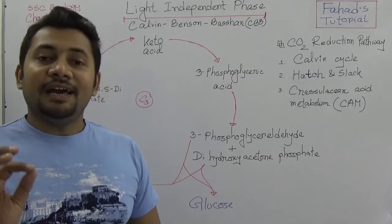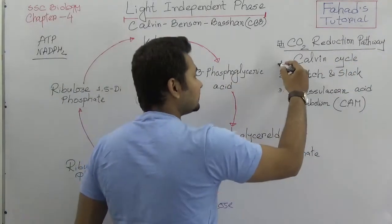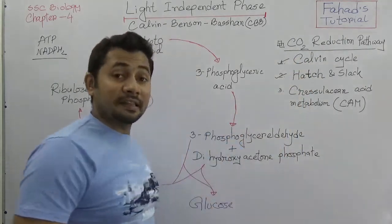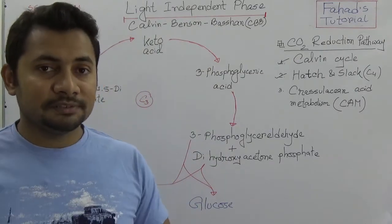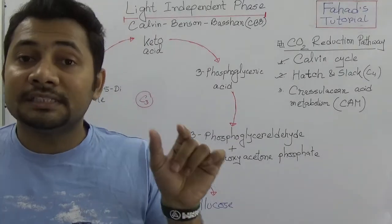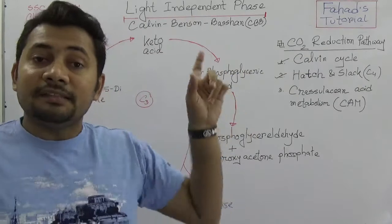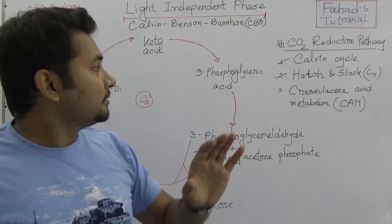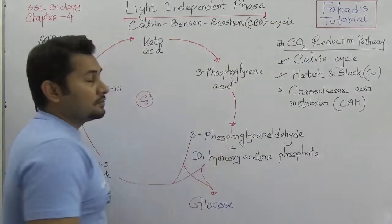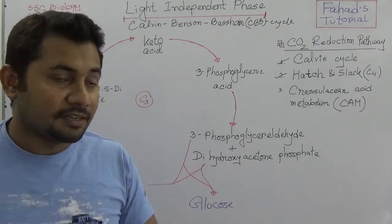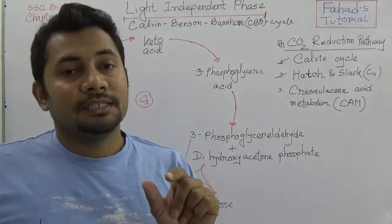This is a carbon dioxide reduction phase. This CO2 reduction pathway can be of 3 types: Number 1 — Calvin cycle. Number 2 — Hatch and Slack cycle, also known as C4 cycle, because the first permanent compound of that pathway is oxaloacetic acid which is a 4-carbon compound. Hatch and Slack will be the next class. In this class I will only be explaining the Calvin cycle, also known as the Calvin-Benson-Bassham (CBB) cycle.